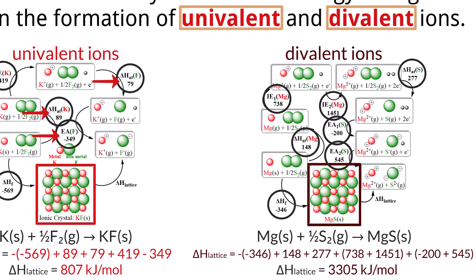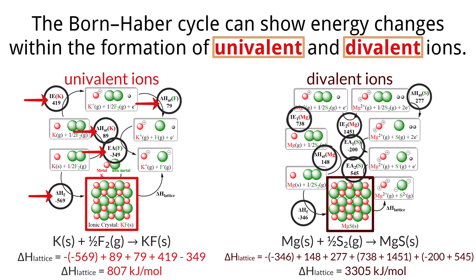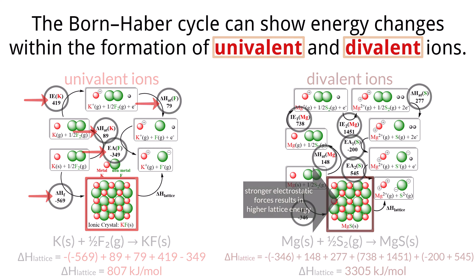The significant difference highlights the influence of ion charges and sizes on lattice energy, with divalent ions such as magnesium 2 plus and sulfur 2 minus leading to much higher lattice energies due to stronger electrostatic forces compared to univalent ions like potassium K plus and fluoride F minus.